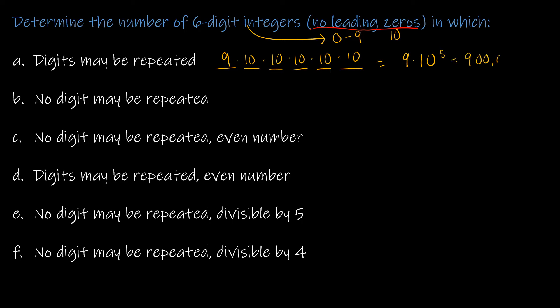For part two, no digit may be repeated. The first digit still has 9 options — anything except zero. The second digit also has 9 options: anything except what was used first, but zero is now available. Then 8, 7, 6, 5 for the remaining positions, since digits are used up. That works out to 136,080.